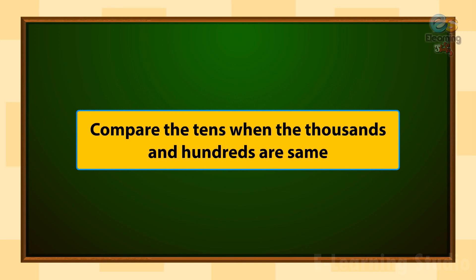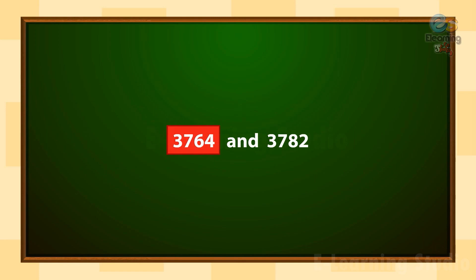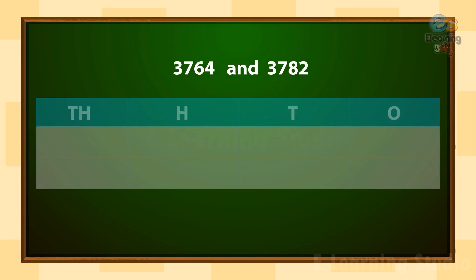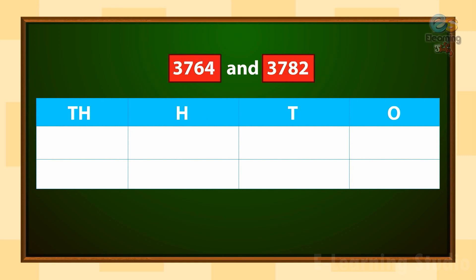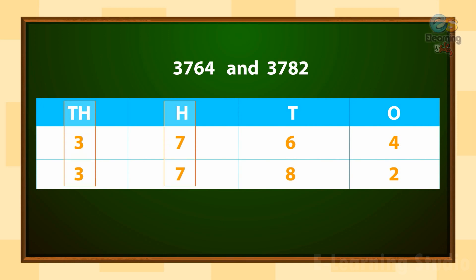Children, compare the tens place when the thousands and hundreds are the same. Here in this example, you can see the numbers 3,764 and 3,782. Again, we arrange the numbers in their place value. Both numbers have the same digits in the thousands and hundreds place. So if the digits in the thousands and hundreds place are equal, we compare the digits in the tens place. We can see in the tens place, 6 is less than 8. So 3,764 is less than 3,782.